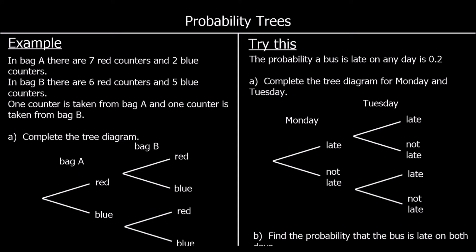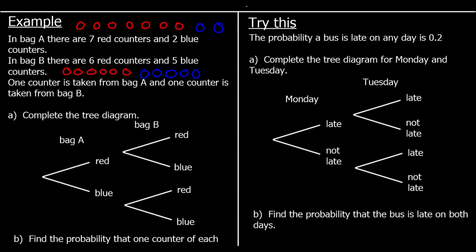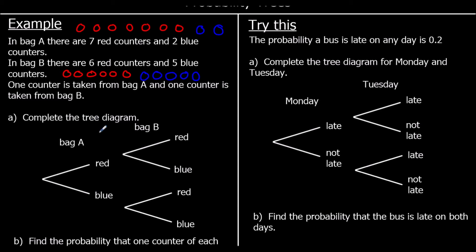And the probability tree. So in bag A, there are 7 red counters and 2 blue counters. In bag B, there are 6 red and 5 blue. One counter is taken from bag A and one counter is taken from bag B. Complete the tree diagram. So for bag A, we've got bag A first. What's the probability of getting a red? So there are 7 red in bag A out of 9 in total. So the probability is 7 out of 9, 7 ninths. The probability of getting a blue in bag A is 2 ninths. 2 are blue out of 9 in total. And then we look at bag B. The probability is completely separate to bag A. It's unrelated.